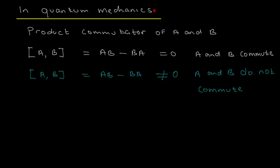In quantum mechanics, the product commutator of a and b is written in square brackets: [a, b], and that equals a times b minus b times a equal to zero. If that's the case, a and b commute — it means it doesn't matter which way you multiply them, you get the same answer. But if [a, b] is not equal to zero, a and b do not commute, meaning the order of multiplication matters.